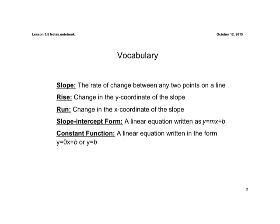The student journal is open to page 31. We're going to start with some vocabulary. Write these five terms down — they give you spots for them in your student journal. Pause the video and write these down.